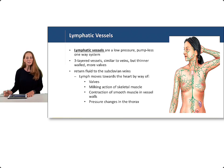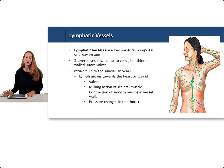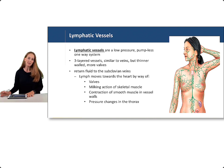Lymphatic vessels are similar to veins, except they're one way. They're a low pressure set of tube-like structures that move lymphatic fluid throughout the body. They're three-layered vessels, very thin-walled, and they contain valves to help push the fluid up towards the heart. They eventually return fluid to the subclavian veins on either side. The lymph moves towards the heart by way of valves, the milking action of skeletal muscle, contraction of smooth muscle in vessel walls, and pressure changes in the thorax — very similar to the way that blood moves through the venous system.